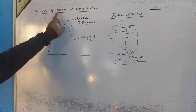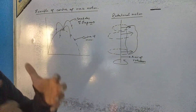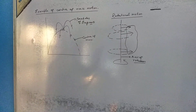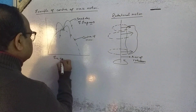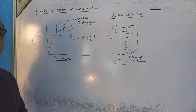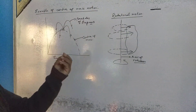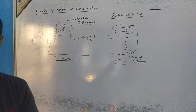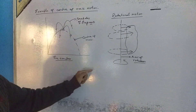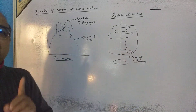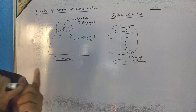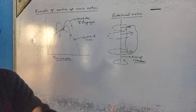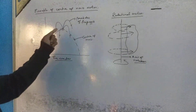I want to give you an example of the motion of the center of mass. Suppose there is a firecracker that is thrown from a point in the ignited state. During its flight, it explodes at a certain point. The firecracker is thrown from here in the ignited state and it bursts here during its flight.